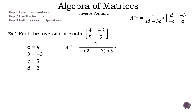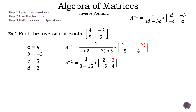Now let's substitute these numbers into the corresponding letters in the matrix part of the formula. Now we have our new matrix: in row 1 we have 2 and the negative of negative 3, and in row 2 we have negative 5 and 4. Now let's simplify the denominator. Our result is 8 plus 15, because 4 times 2 is 8 and minus negative 3 times 5 is positive 15. The negative of negative 3 is now 3, because the negative of a negative number is positive.